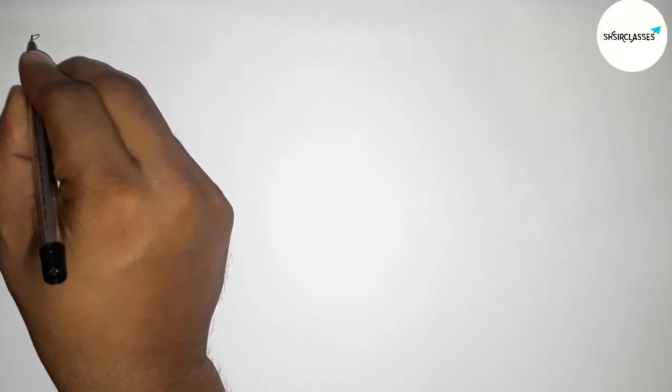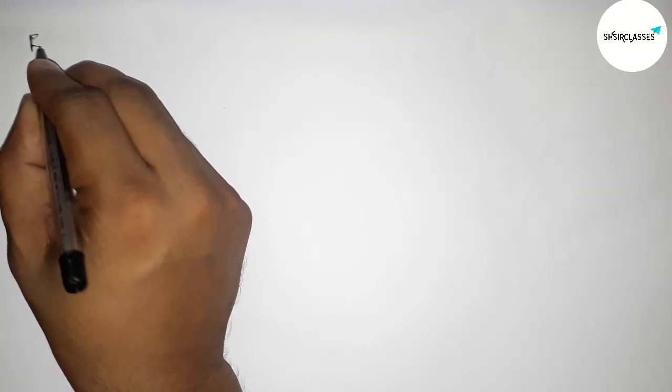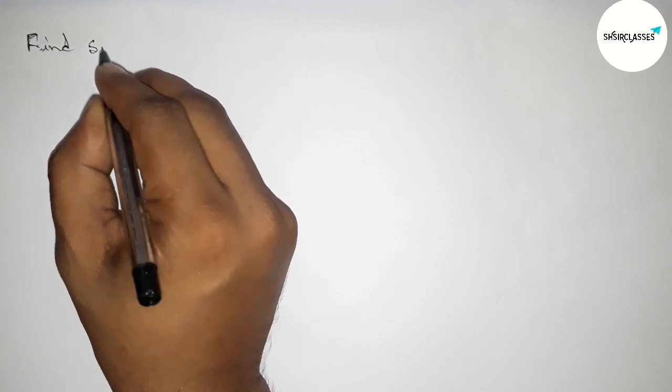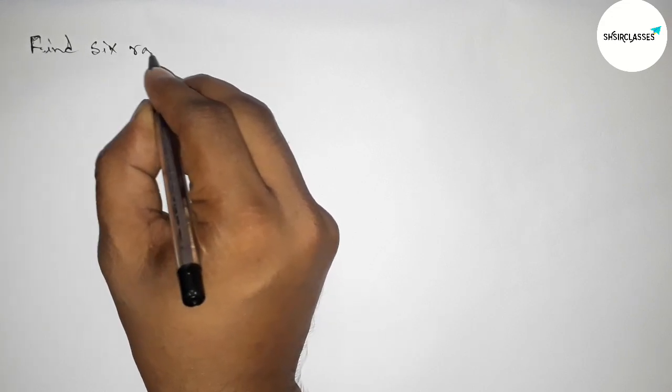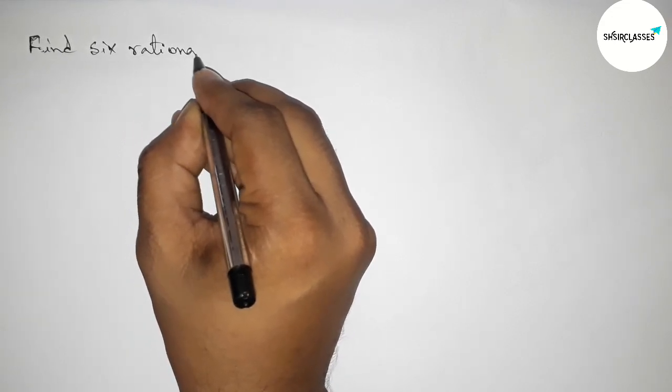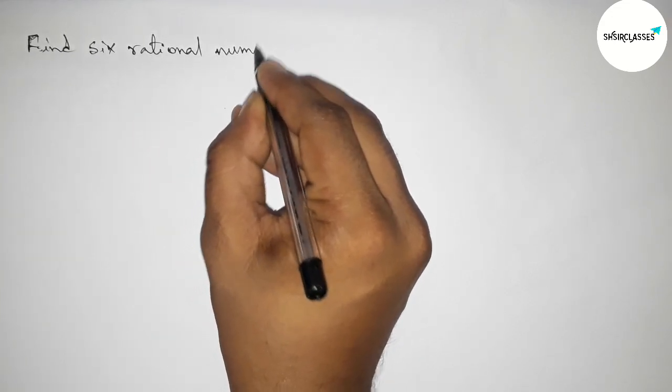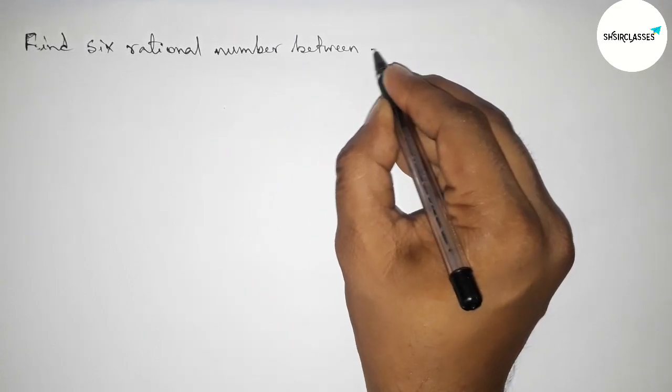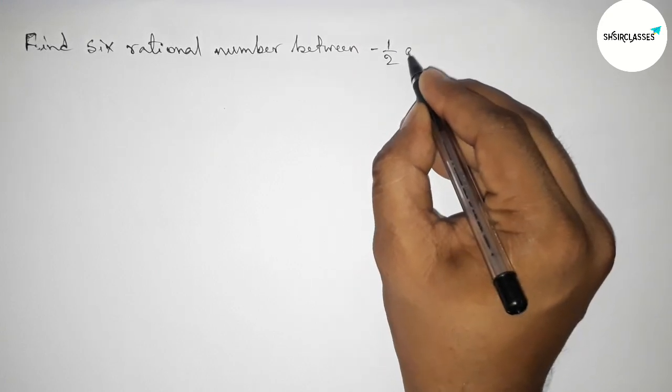Hi everyone, welcome to SI Share Classes. Today in this video we have to find six rational numbers between minus 1 by 2 and 1 by 2 in an easy way. So please watch the video till the end. Let's start the video.